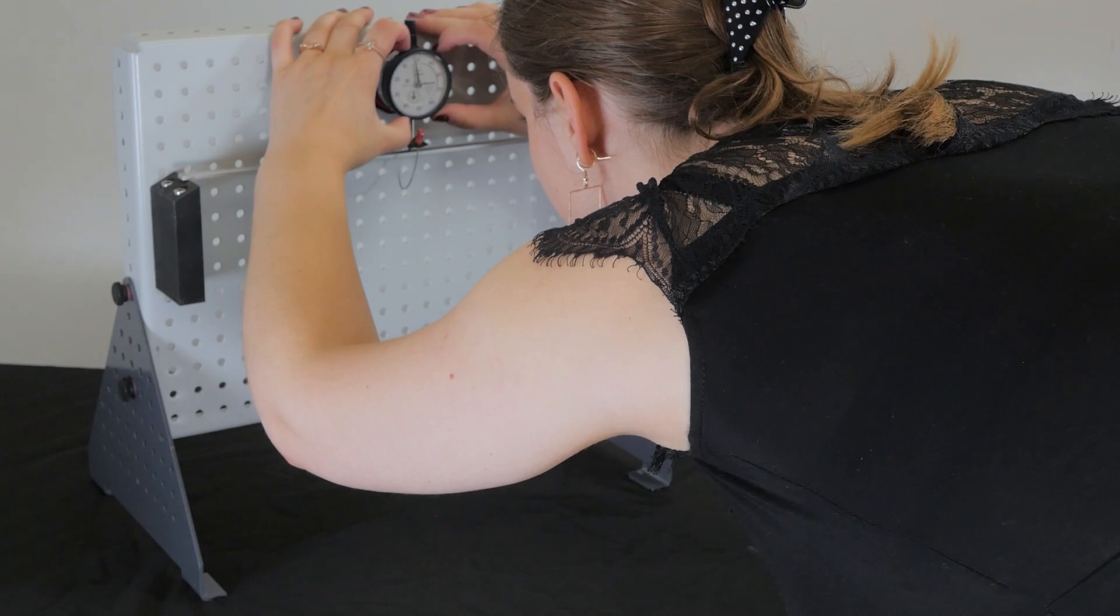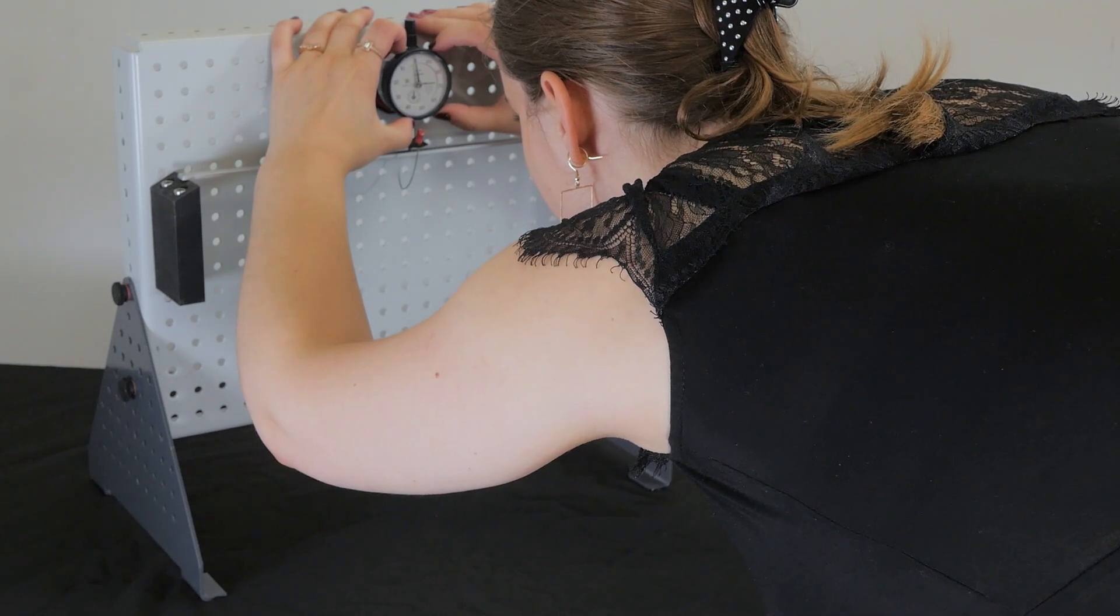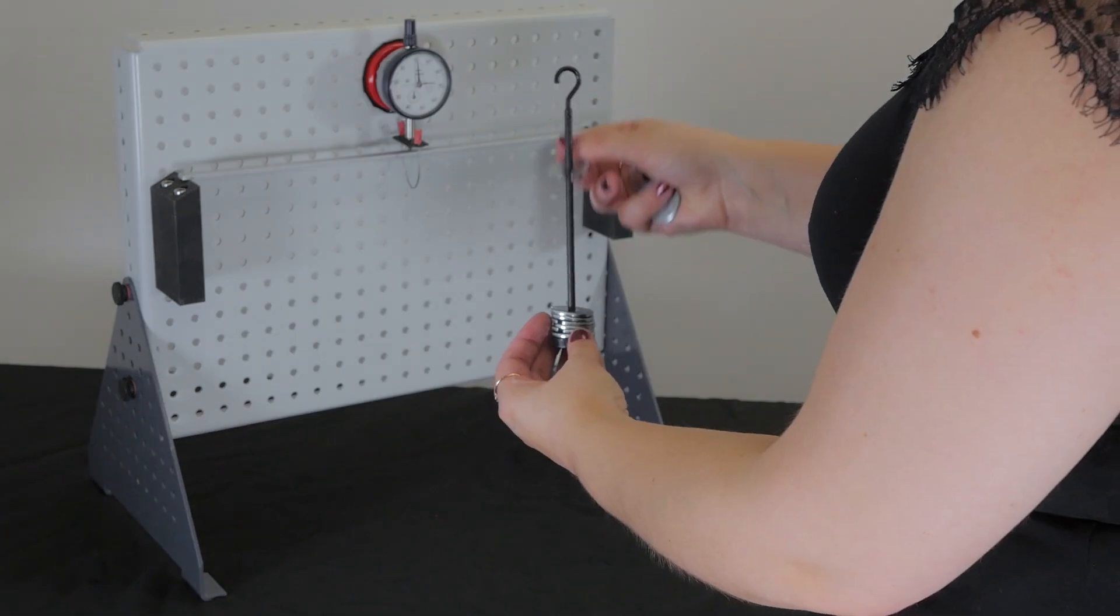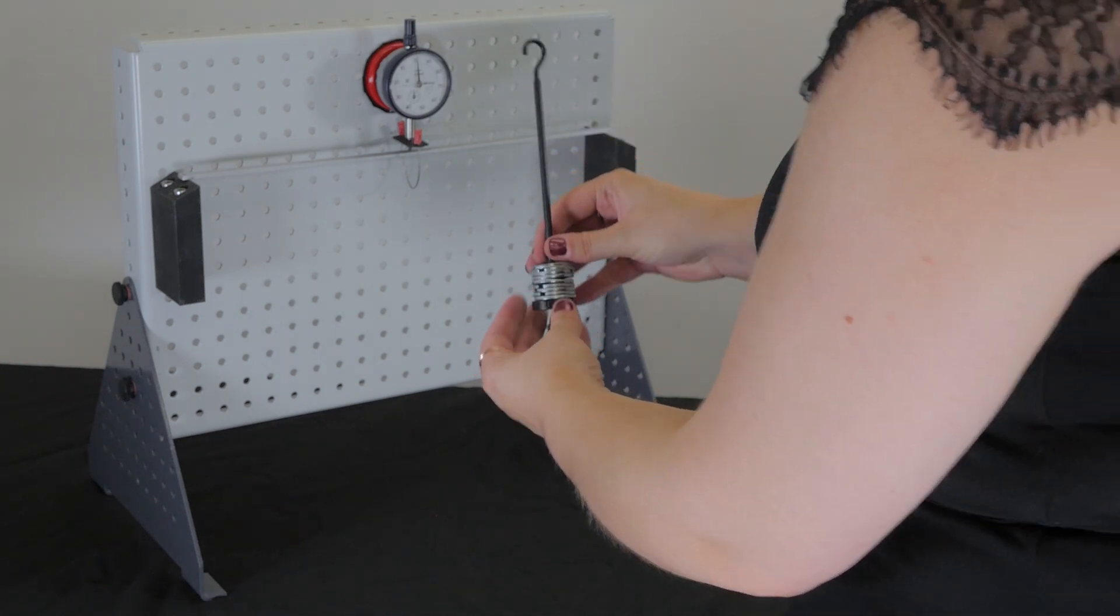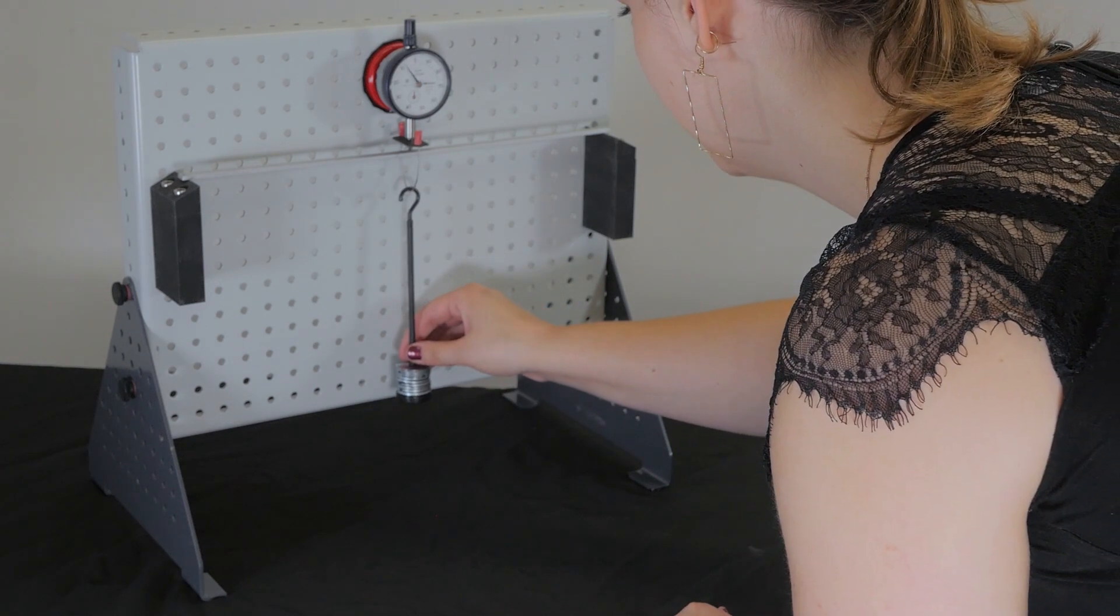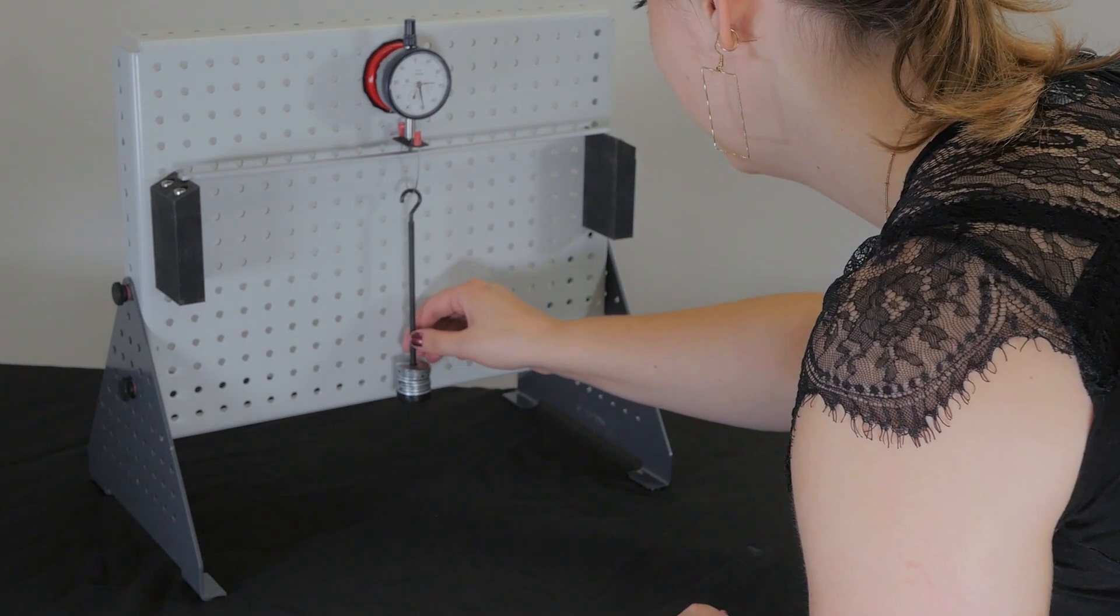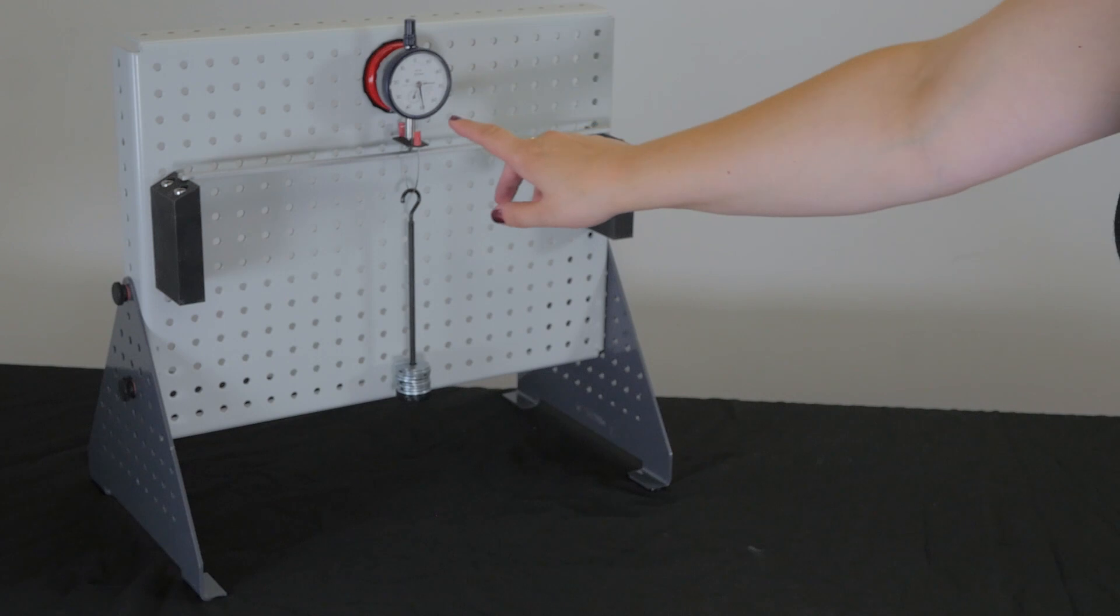Set and zero the dial indicator, then add the weights in increments of 10 grams. After each 10 grams, tap the work panel to reduce the effect of friction, then repeat this process until 500 grams have been added. Now you can calculate and plot the deflection against load.